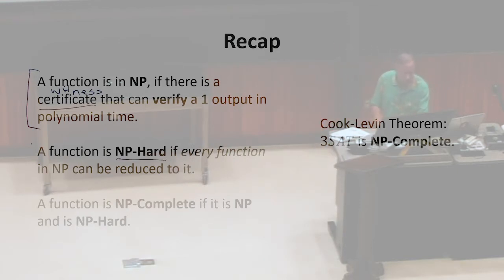A function is NP-hard if every function within NP can be reduced to it. That means it's at least as hard as the hardest problem within NP. And if it's also within class NP, then we call it NP-complete.